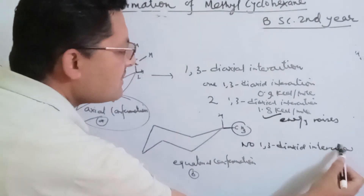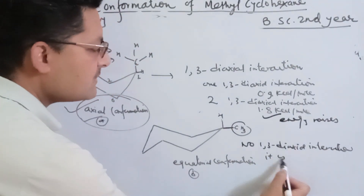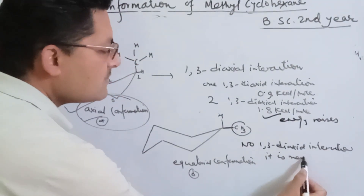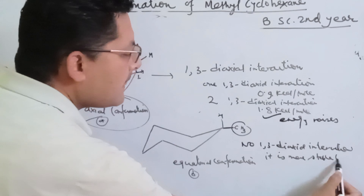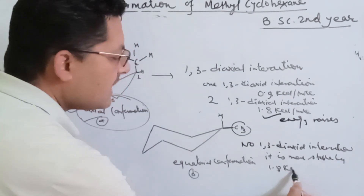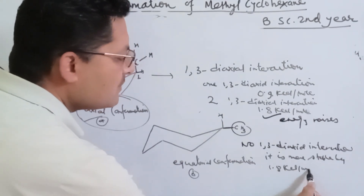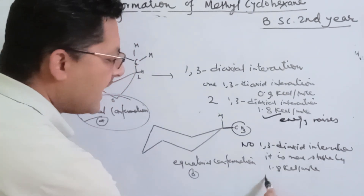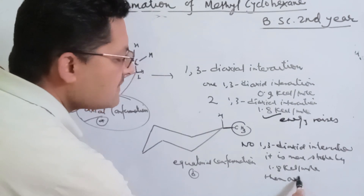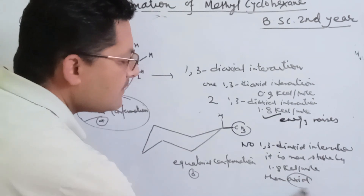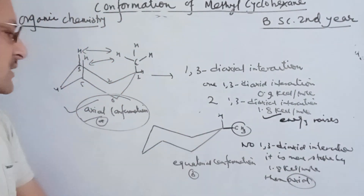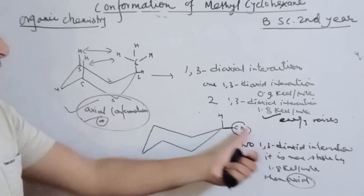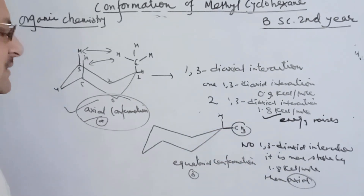The equatorial conformation is more stable by 1.8 kilocalorie per mole than the axial conformation.